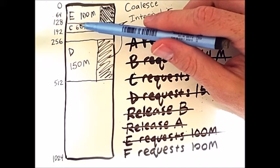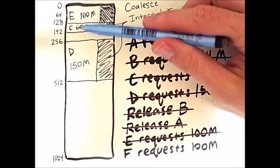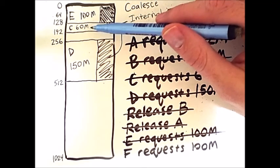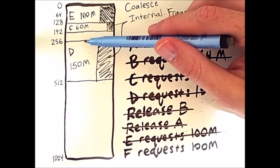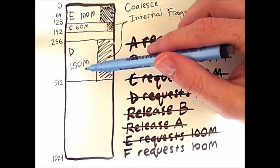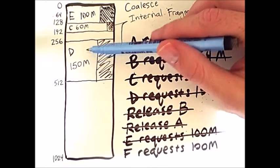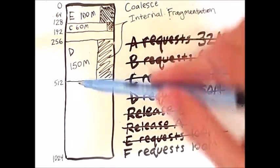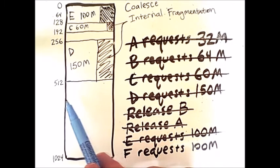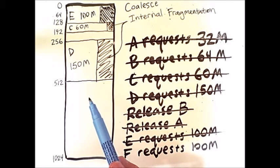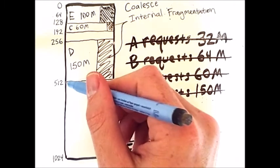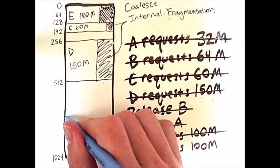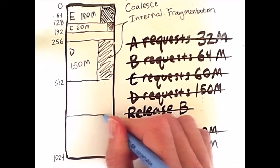And so we will then check here and see that this 256 region is occupied. And so we will then have to go down from this initial 512 split.